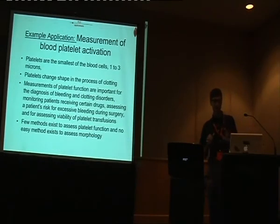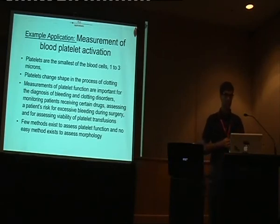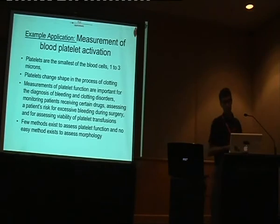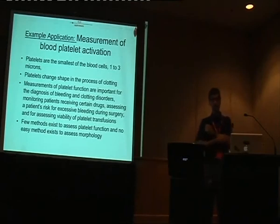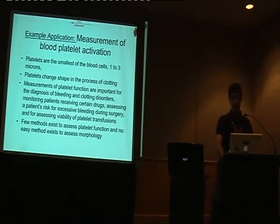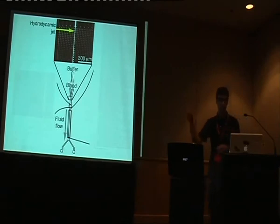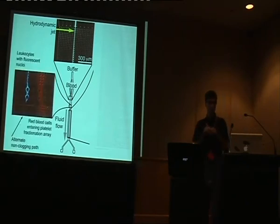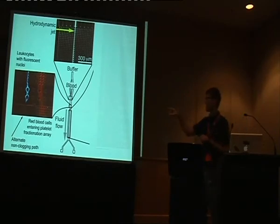Another application: measurement of blood platelet activation. Platelets are small, roughly one to three microns and disc-shaped, and they change shape when they clot or get activated. Assessing platelet function is important for many clinical reasons, but few methods exist to do so, and it's really hard to assess platelet morphology without a good electron microscope. We found that the bump array can actually sense the shape change — you can see it. The chip uses the same narrow injector design with buffer on the sides. The first step is to separate the white blood cells from the red blood cells, since whites are large and would interfere with the experiment.